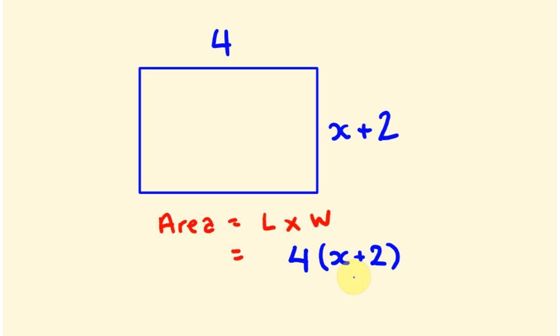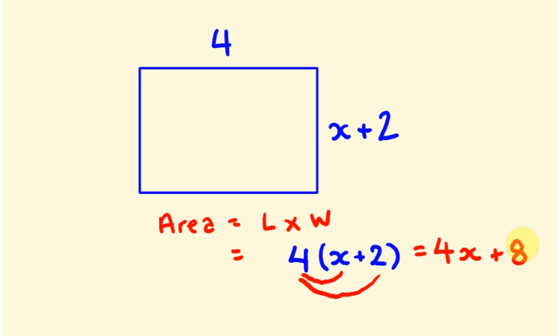We can actually expand these particular brackets according to the distributive law. The way we do this is we multiply each term in the brackets — this x and this 2 — by the first factor, which is 4. So x is being multiplied by 4, and the 2 is also being multiplied by 4. So 4 times x is 4x, and positive 2 times 4 is positive 8. So we have successfully expanded these brackets.